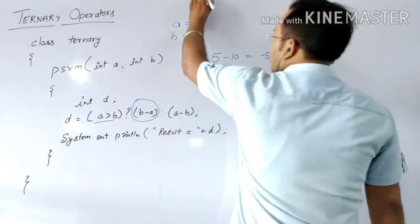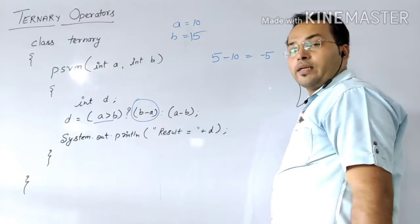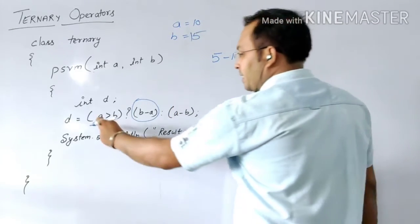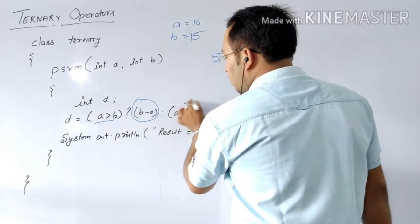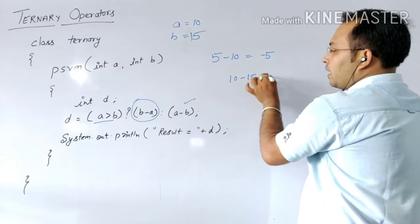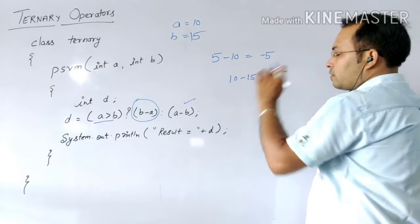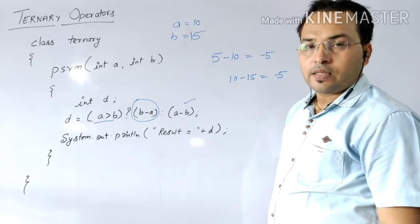And if you use like that, a equals to 10 and b equals to 15, in that condition, a is not greater than b, so this situation will not execute, this one will execute. And you will get 10 minus 15 as the answer. That means minus 5 will be your answer in that situation.